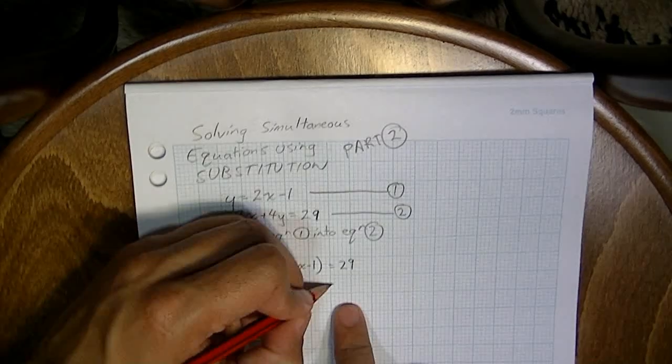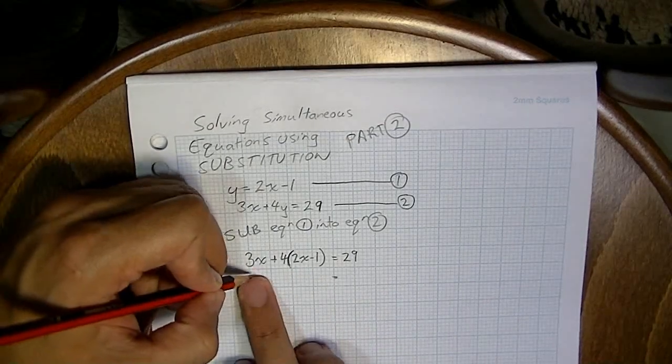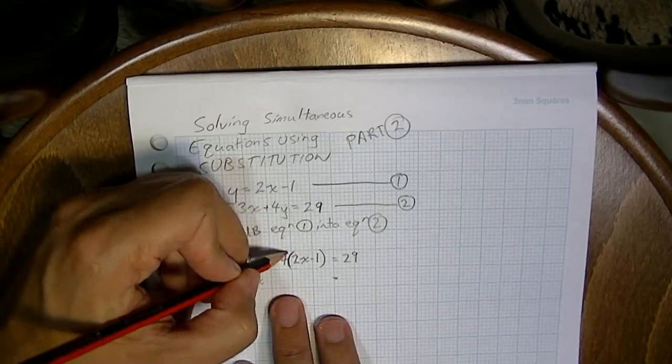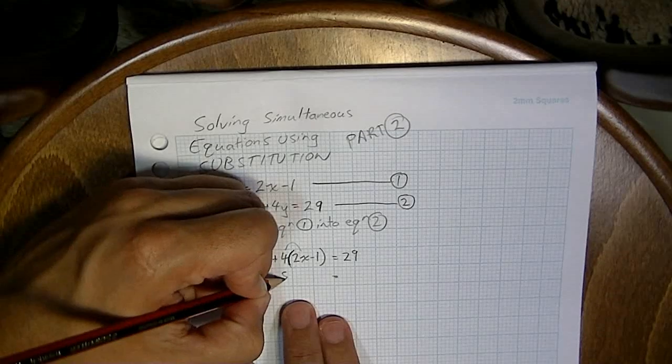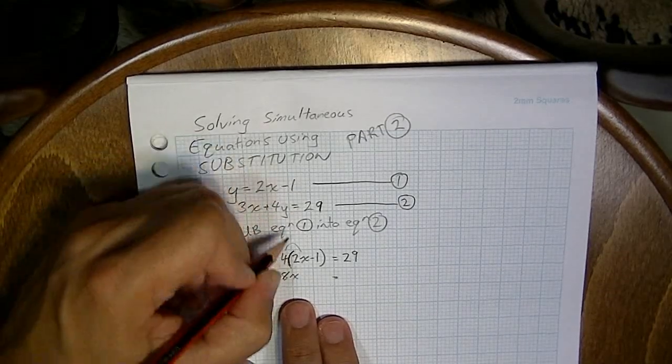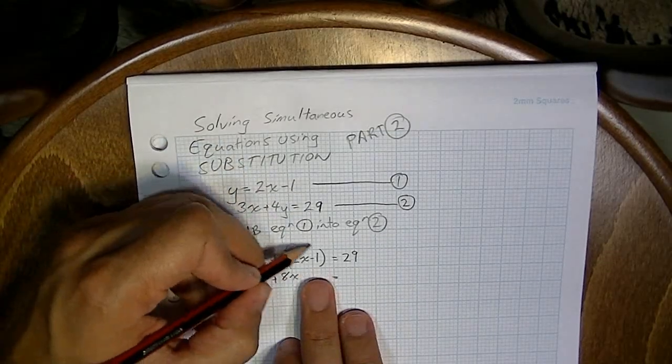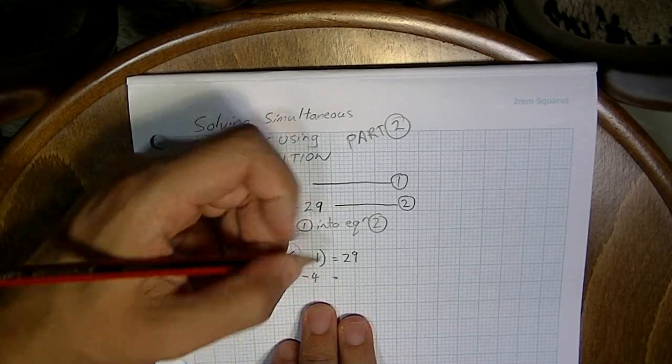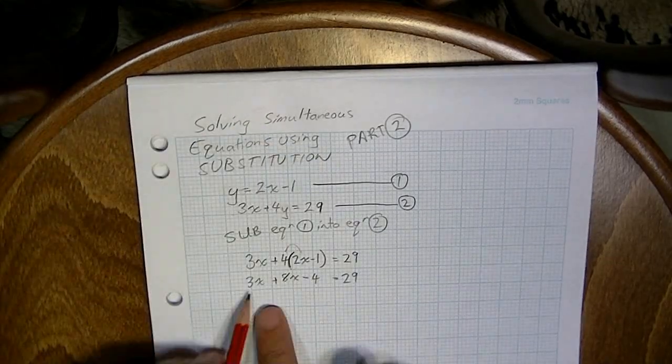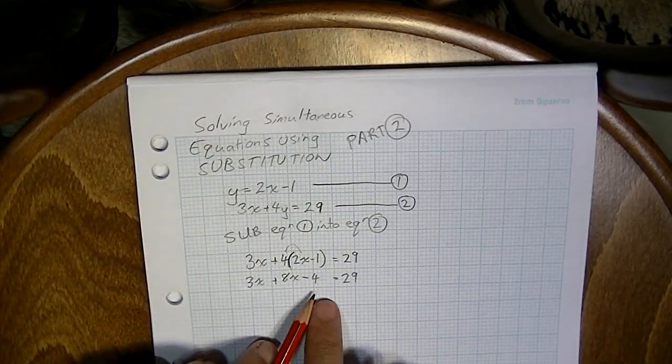After that, you guys should be able to handle the algebra required to solve this. That 3x stays as it is. 4 times 2x, this is the distributive law, just expanding these brackets. 4 times negative 1, that's negative 4, equals 29. So 3x plus 8x minus 4 equals 29.